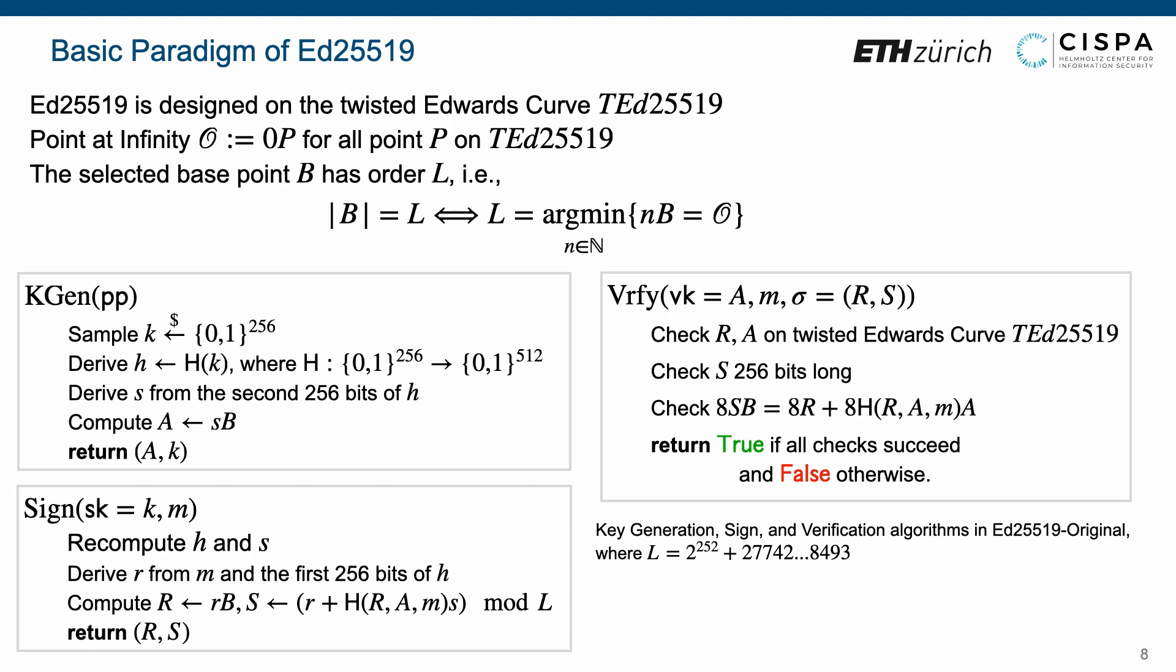Finally, it checks whether the equation 8 times S times B equals 8 times R plus 8 times hash of R, A, M times A holds, and outputs true if all checks succeed and false otherwise.